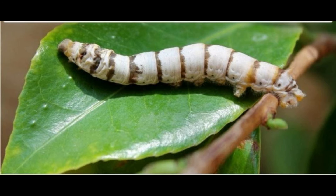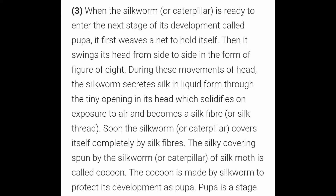The caterpillars grow in size to about 3 inches and are then ready to enter the next stage, that is pupa. In this stage, the caterpillar weaves a net to hold itself and takes on a new shape. During this time, the head of the caterpillar produces a fiber made of protein.